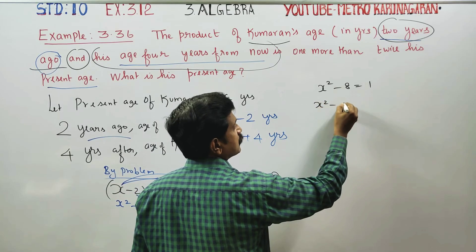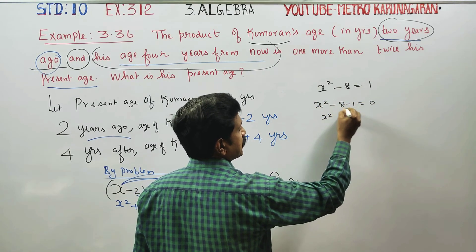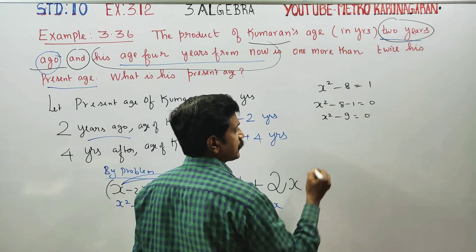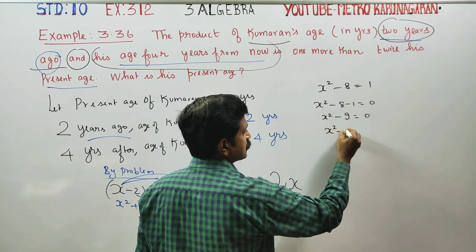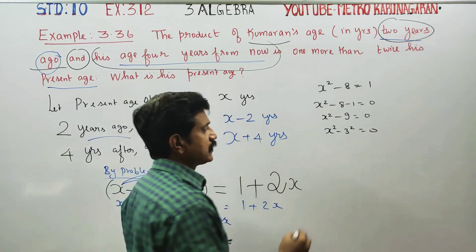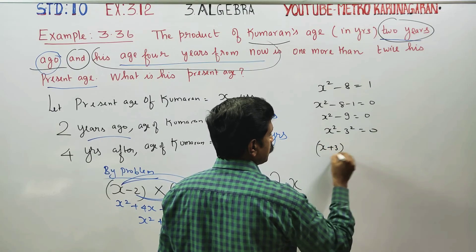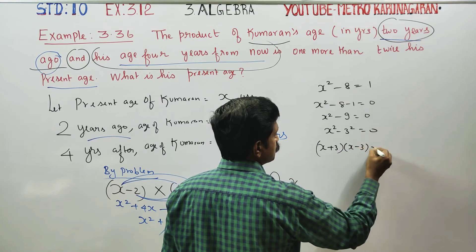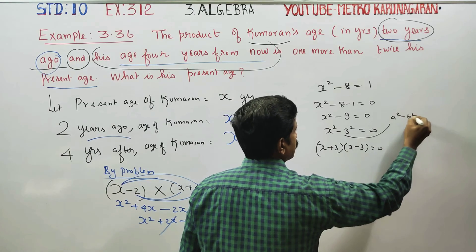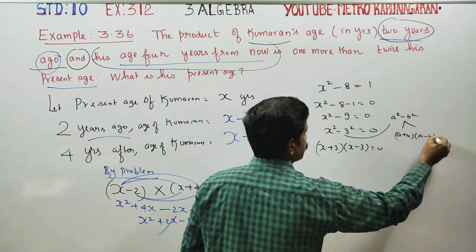So x squared minus 8 minus 1 equals 0, which gives x squared minus 9 equals 0. This is of the form a squared minus b squared, which uses the algebra formula a squared minus b squared equals a plus b into a minus b.